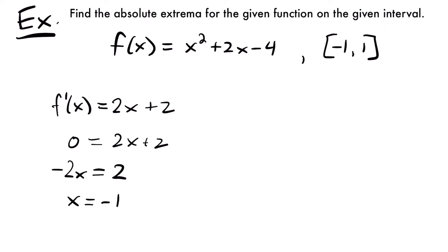That's our critical number for this function — where our function has a slope of zero on this interval. You'll notice that this negative 1 is actually the same as one of our endpoints. The next step is to plug in the value of our critical number into our function to find its y output, then plug in our endpoints to find their y outputs, and compare those values of y to see which is the maximum and which is the minimum. But since the critical number is the same as one of our endpoints, we really only have to plug in the endpoints.